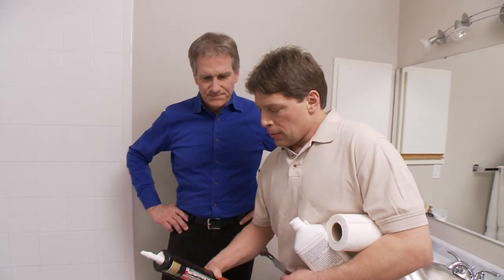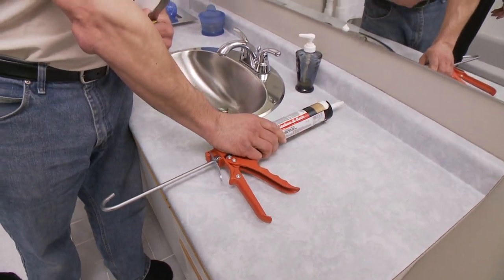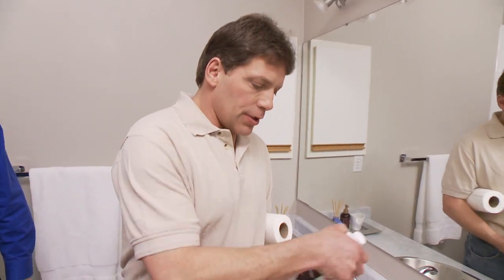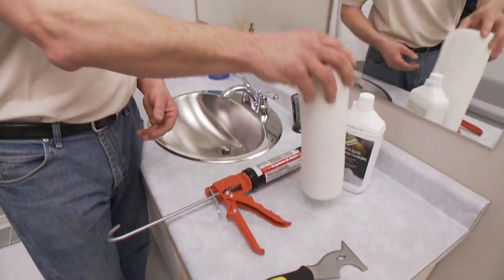All right, so what do we need to do the job? Well, we've got a caulking gun, a tube of silicone that will match the tub and tiles, some mineral spirits, a six-in-one tool, and a roll of paper towel. Right on. So, we've got everything we need for the job. All right, let's get started.